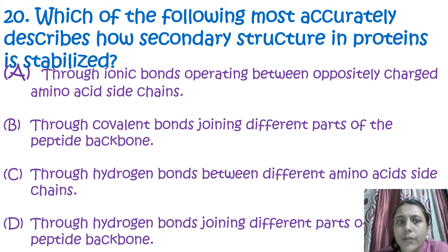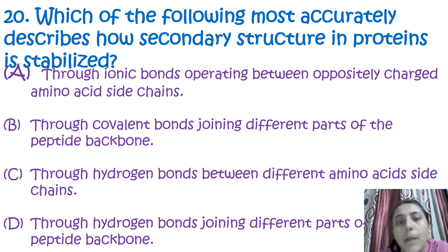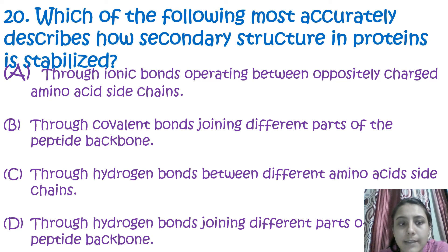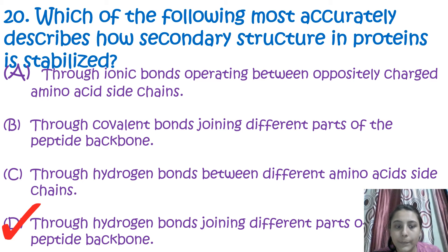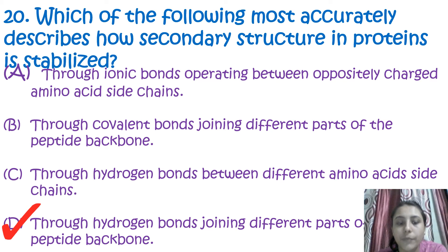The next question is: which of the following most accurately describes how secondary structure in proteins is stabilized? The correct answer is through hydrogen bonding joining different parts of peptide backbones.